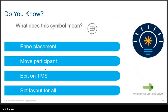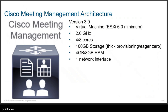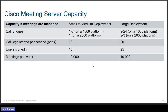Regarding CMM architecture, it is supported for version 3.0. It can run on a VMware virtual machine on an ESXi host and supports the following specifications: 2.0 GHz processor with 4 or 8 cores, 100 GB storage, 4 or 8 GB RAM, and one network interface card is required.